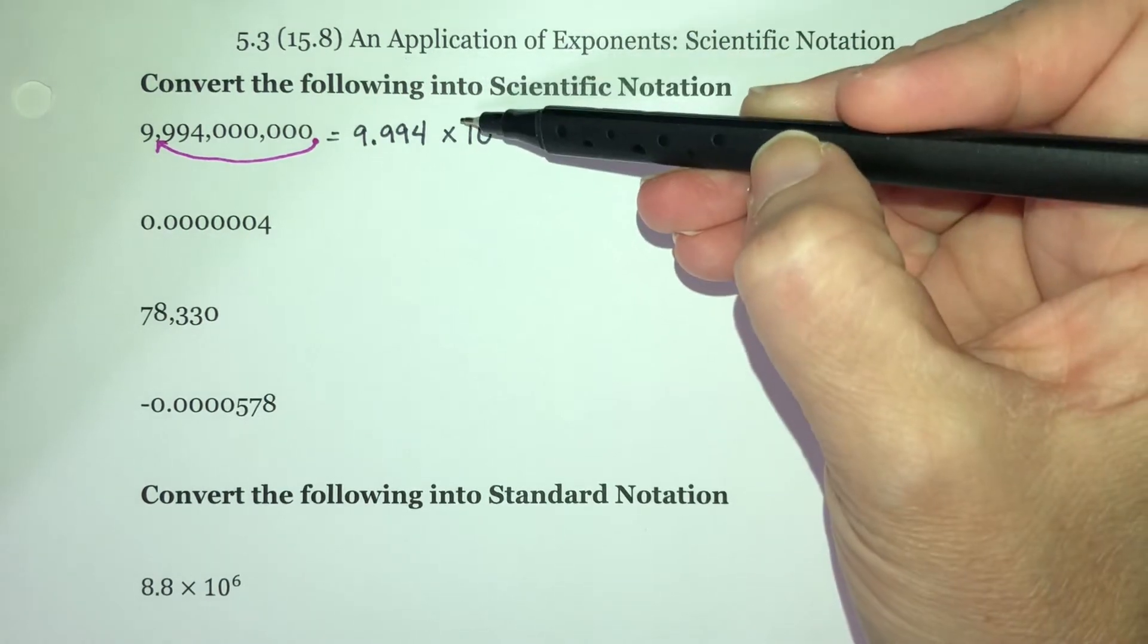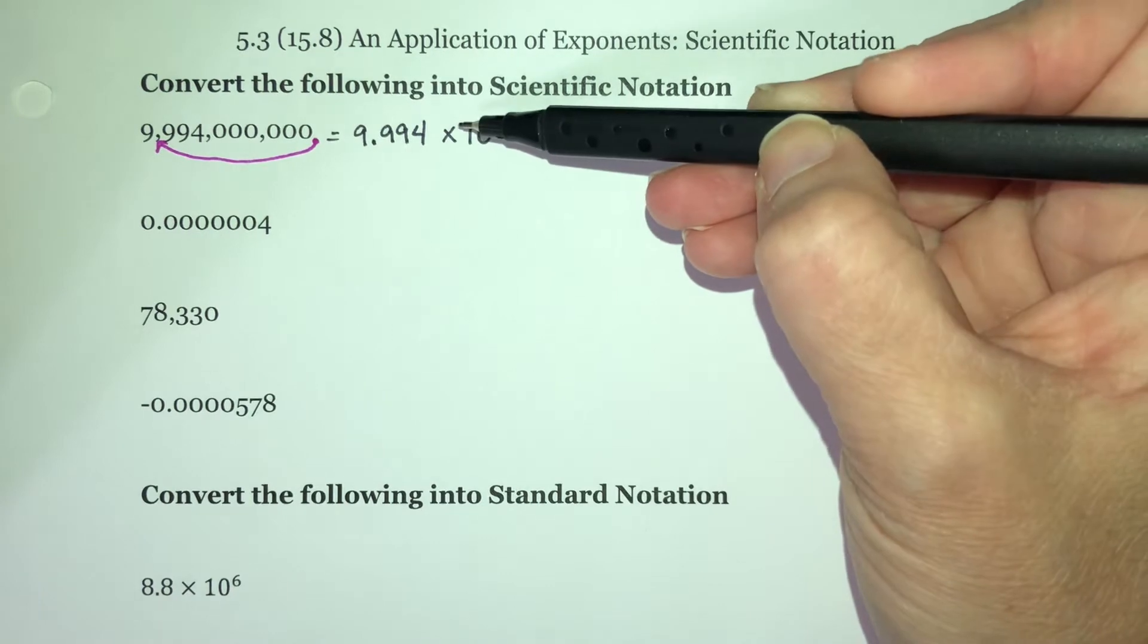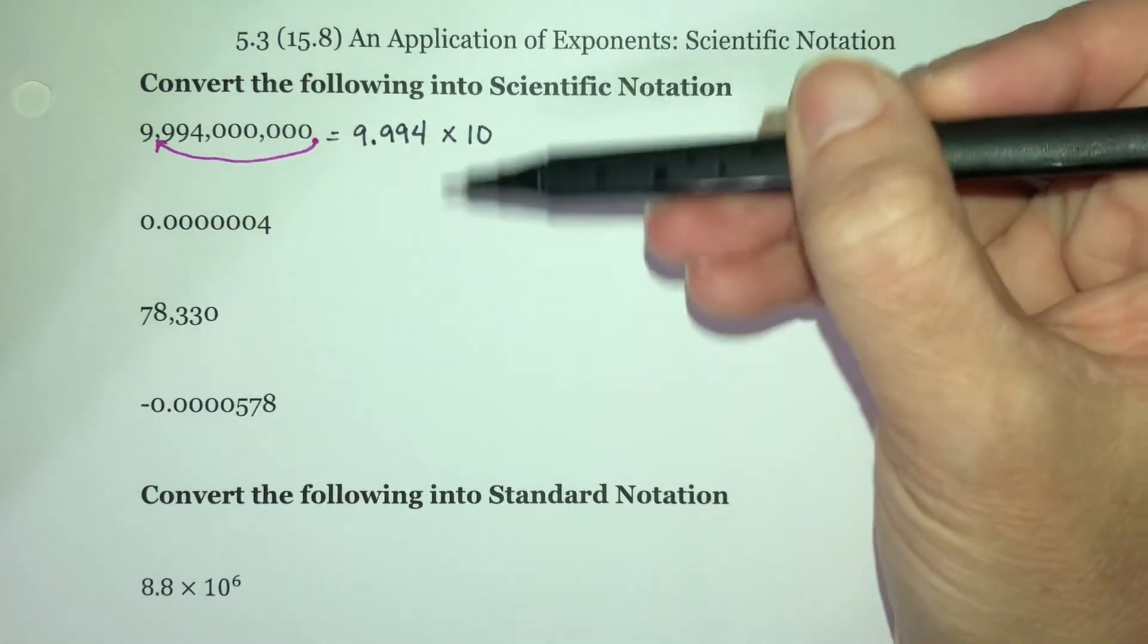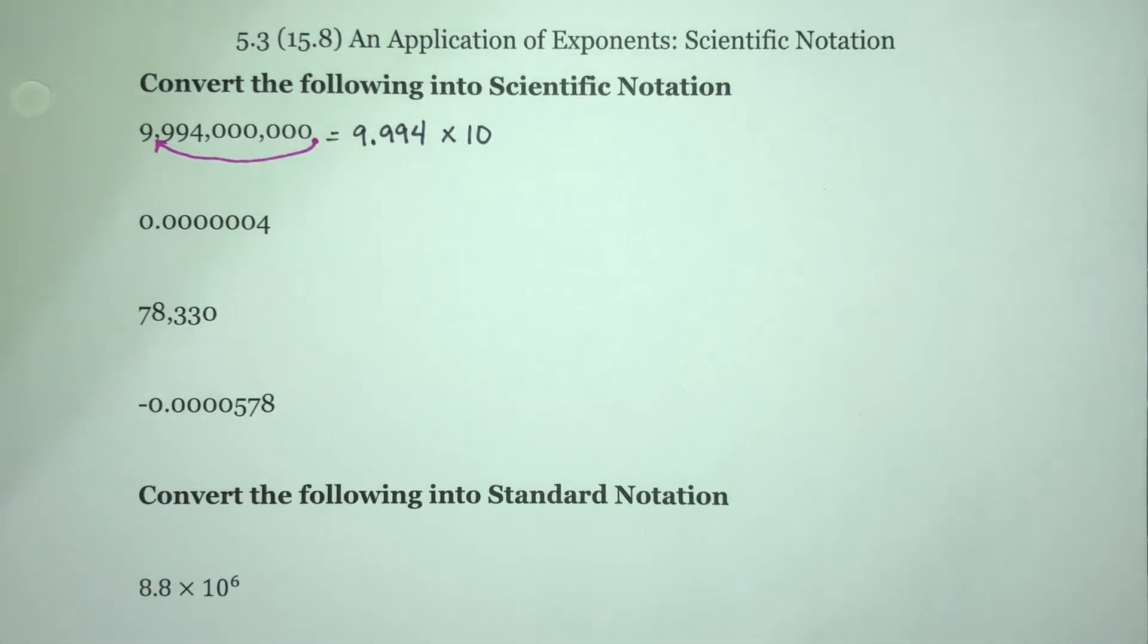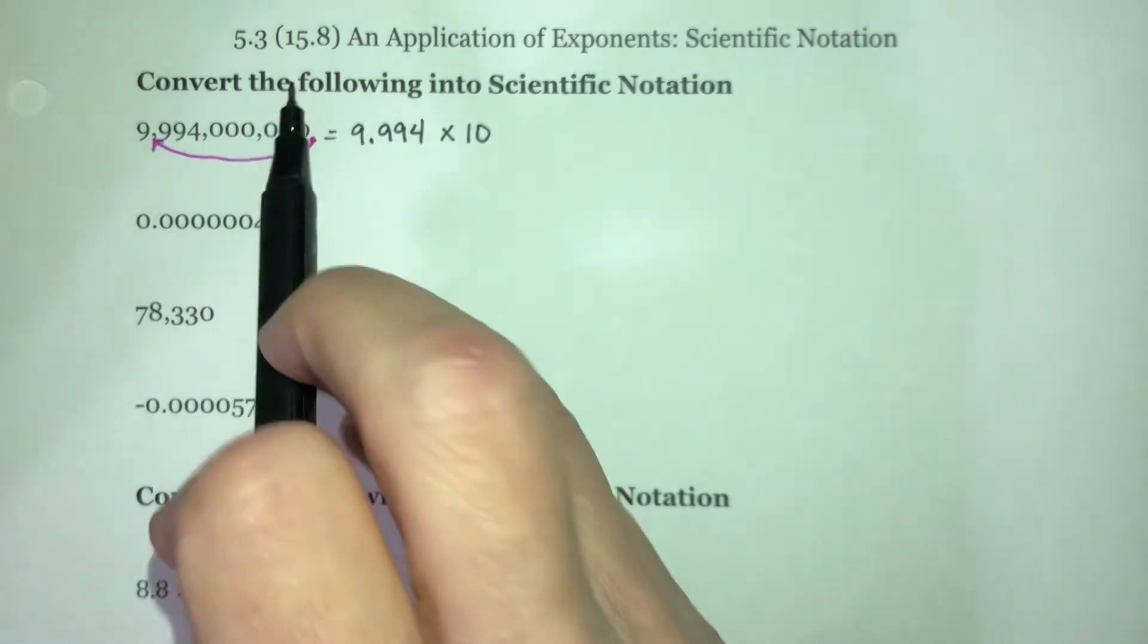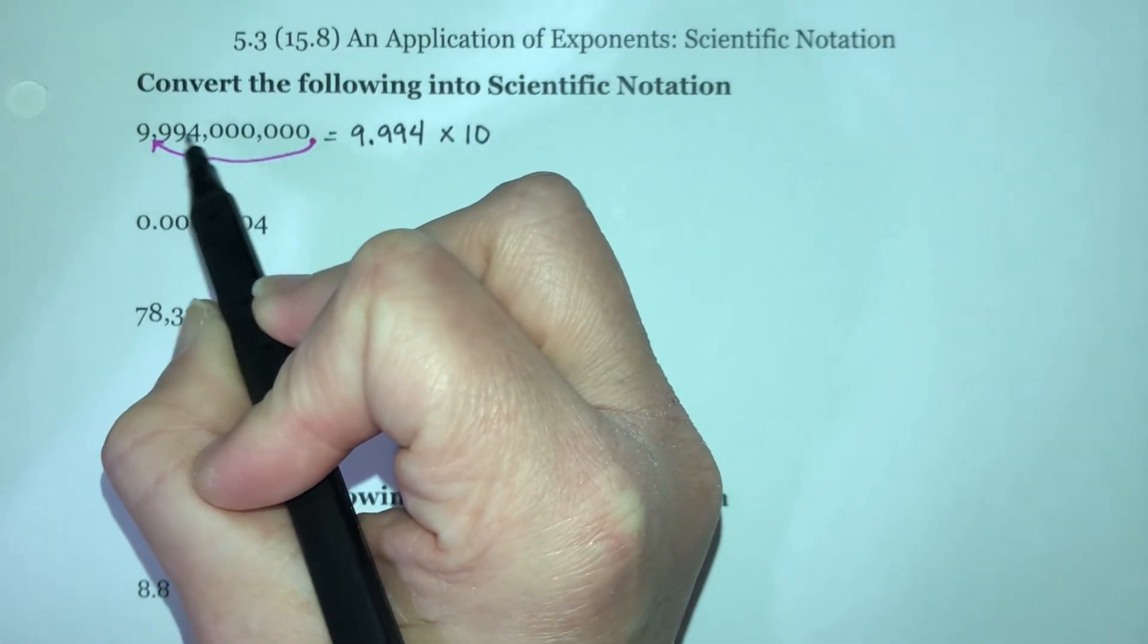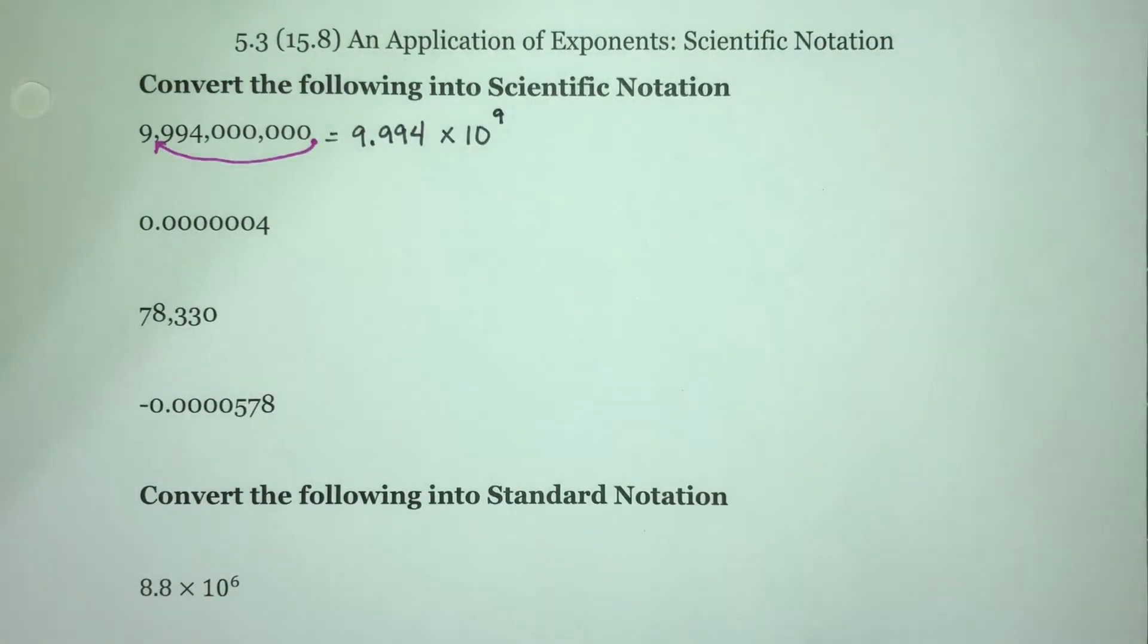Now I'm not going to worry about the power just yet. What I want to point out is that this is the only time in algebra that we still use the X for multiplication, so you're just not going to see a dot here. Now what do we need to do to figure out what that exponent needs to be? Well, the first thing we need to do is count how many places we moved that decimal point. So we've moved it one, two, three, four, five, six, seven, eight, nine spots, so that's going to be either a nine or a negative nine.